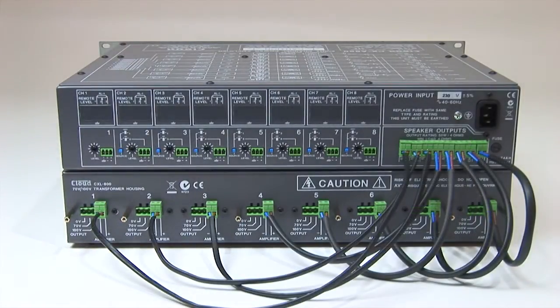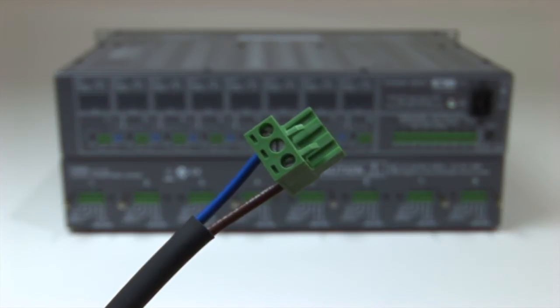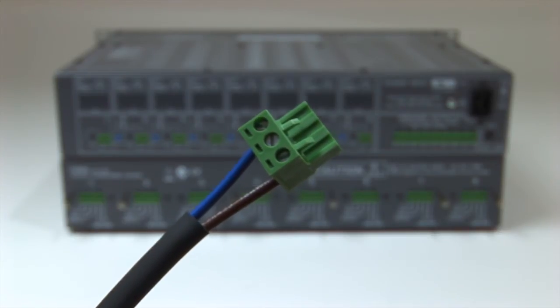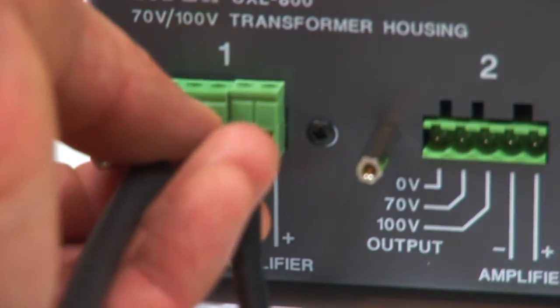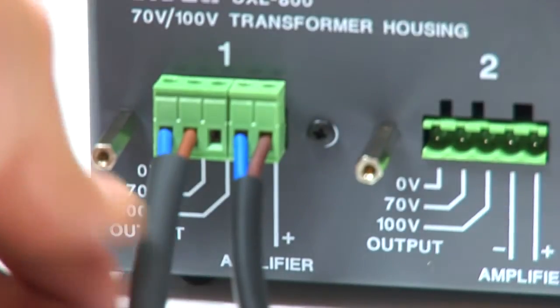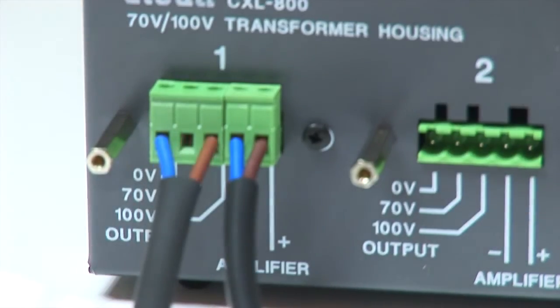Once all the required outputs are connected, connect the speaker cable to the outputs of the CXL800 using the 3-way Phoenix connectors provided. Use terminal blocks 1 and 2 for 70 volt outputs or 1 and 3 for 100 volt outputs.